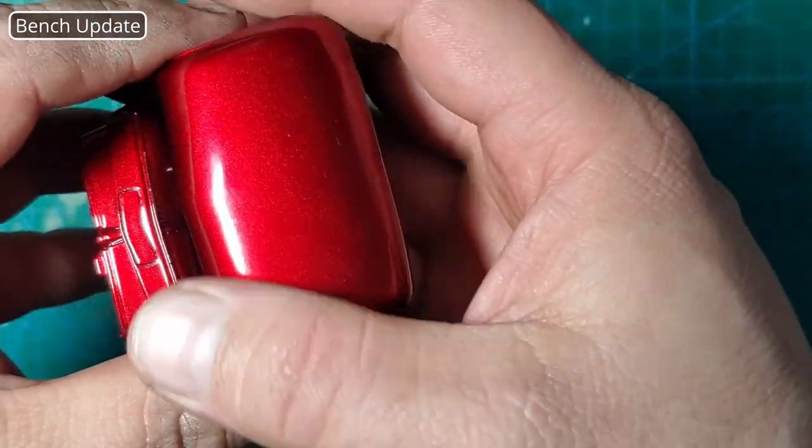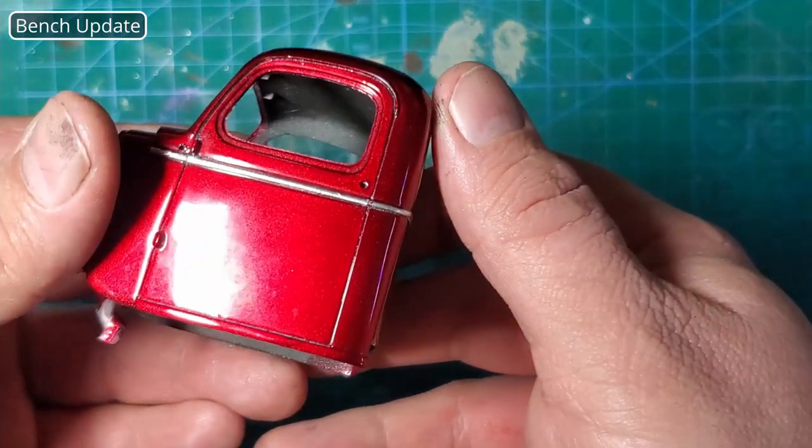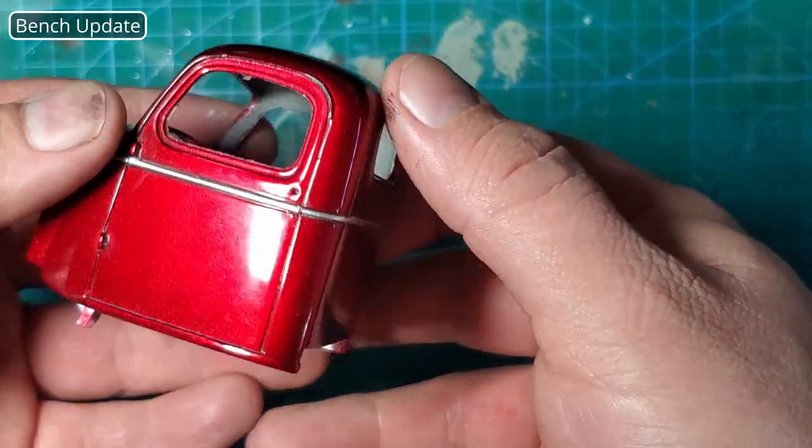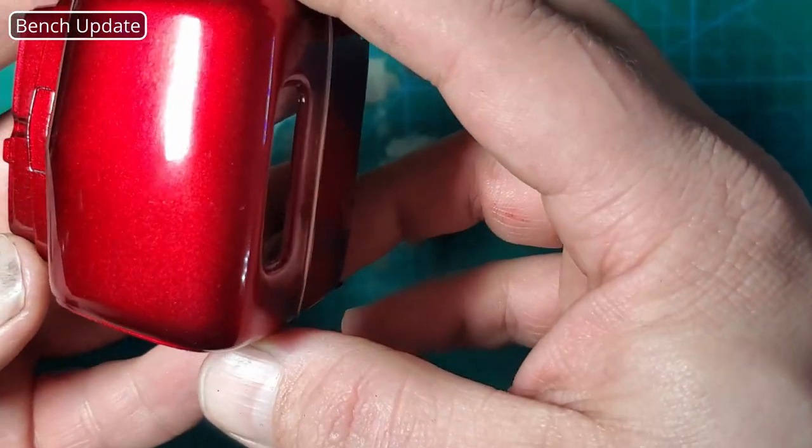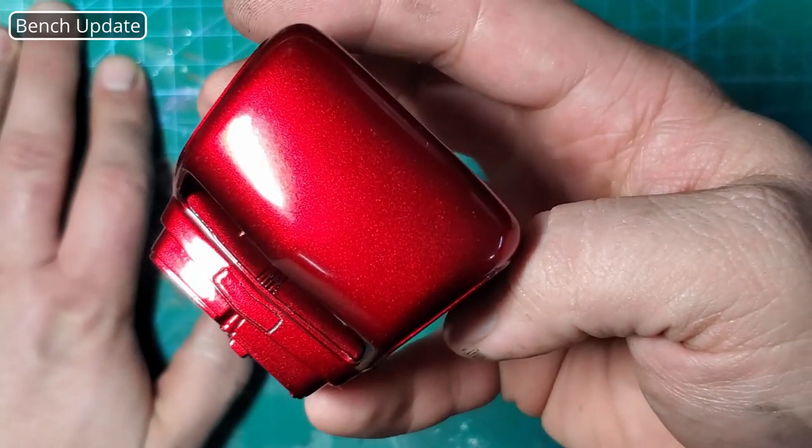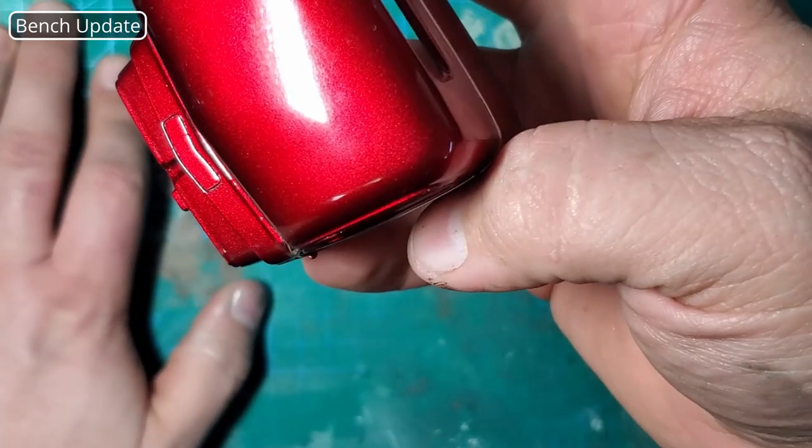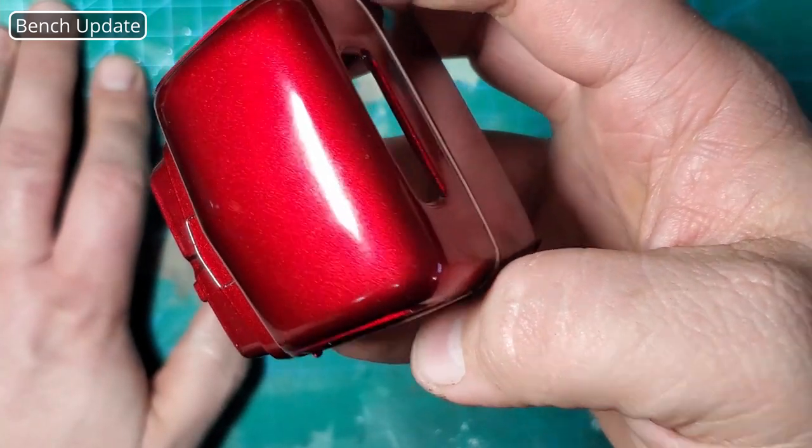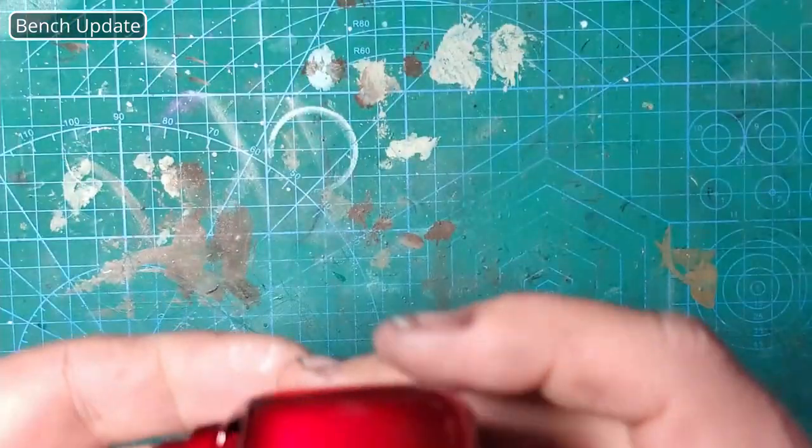This camera is just not doing any justice to this red. It almost looks like a texture but when you look at it in real life it's not, it's metal flake. The camera is making it look almost like a texture but when you look at it in real life it is glassy smooth and what you're seeing is actual shiny sparkly metal flake. It's absolutely gorgeous.